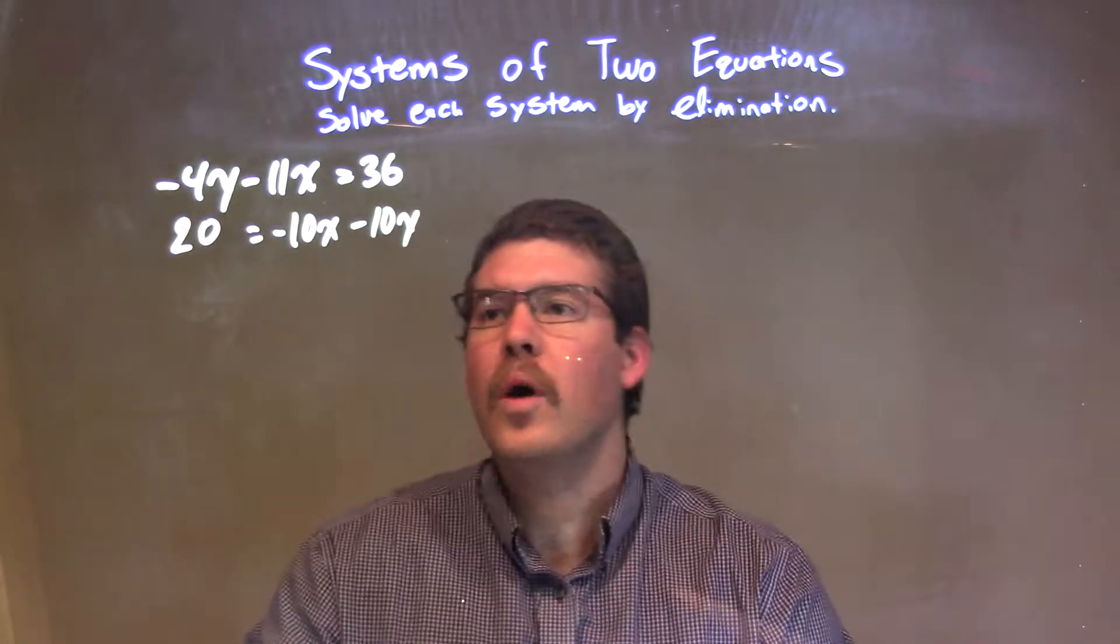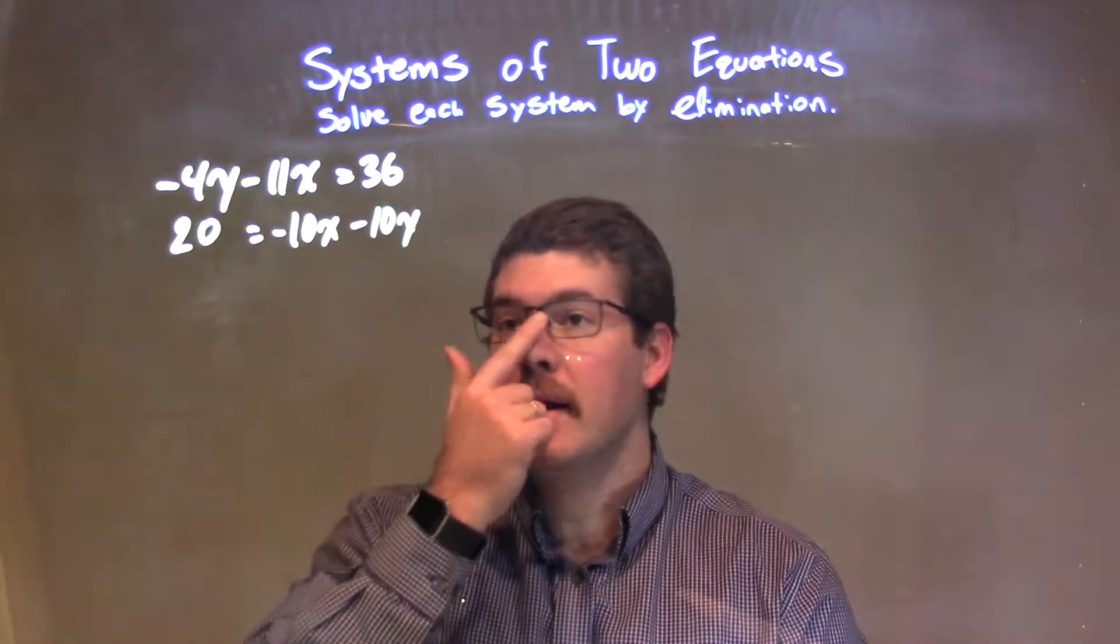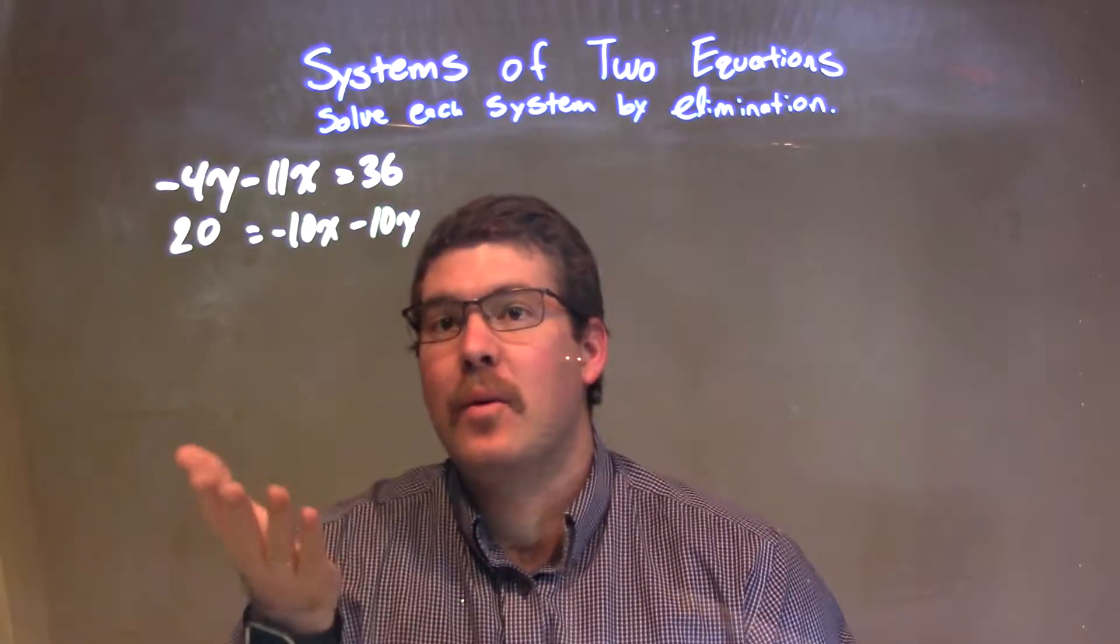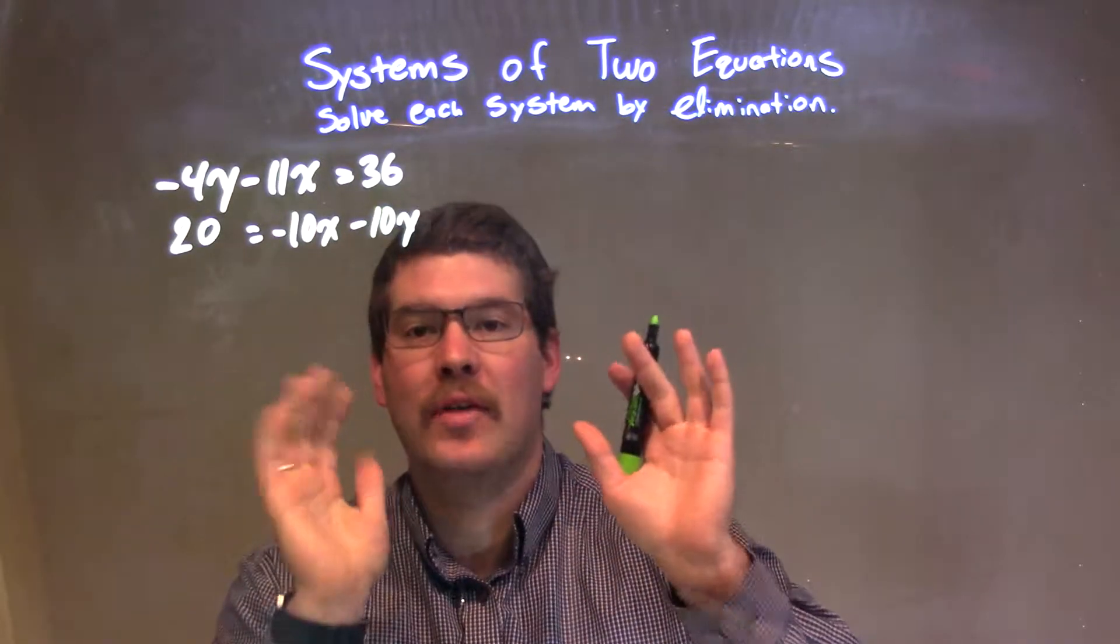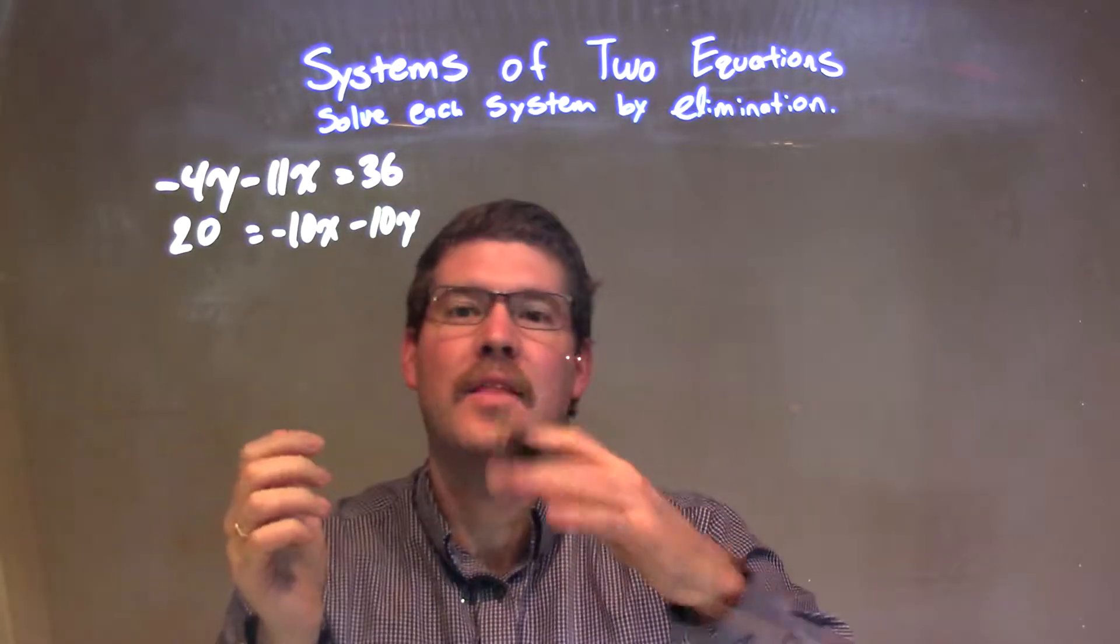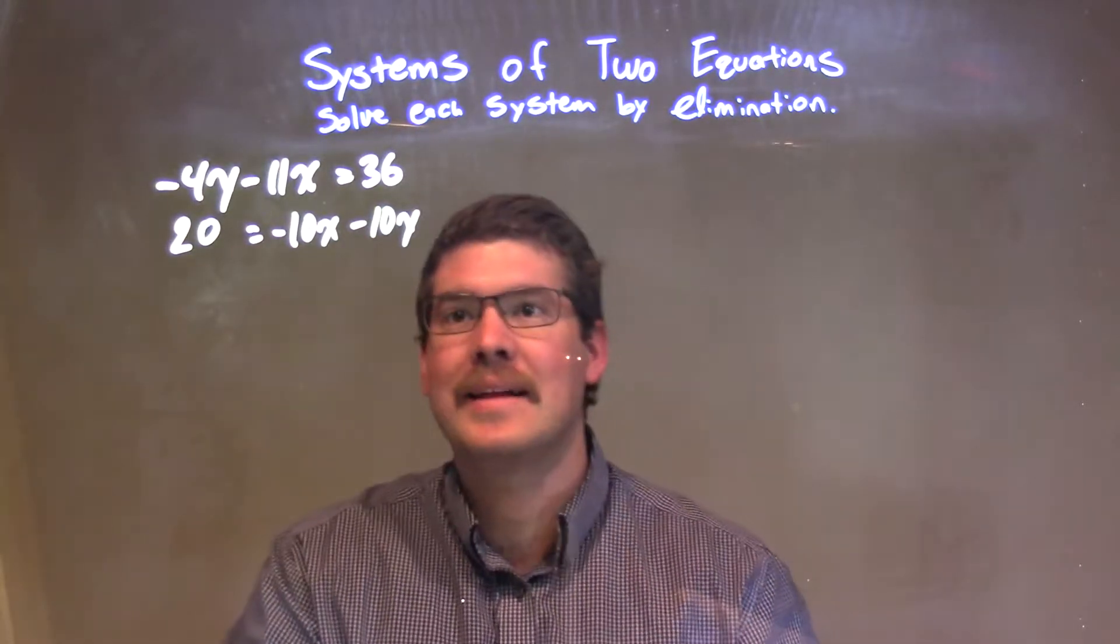What I want to do is get these equations to look the same, essentially have all the x's on one side, and y's on one side, and the numbers on the other side. That's what I like to see for elimination.